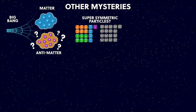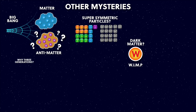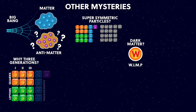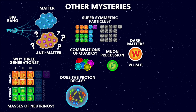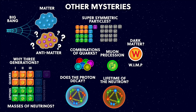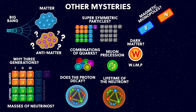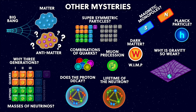Also, the most popular theory to explain dark matter is that it's made of some kind of particle we haven't detected yet, although there are many efforts to do just this. Other questions are: why are there exactly three generations of quarks and leptons? What are the masses of the neutrinos? What combinations of quarks are possible? What's up with the recent results on muon precession frequency? Protons are very stable particles but do they ever decay? What exactly is the lifetime of a neutron? Do magnetic monopoles exist? Is there a Planck particle? Why is gravity so weak? What is time? As ever in science, more research is needed.